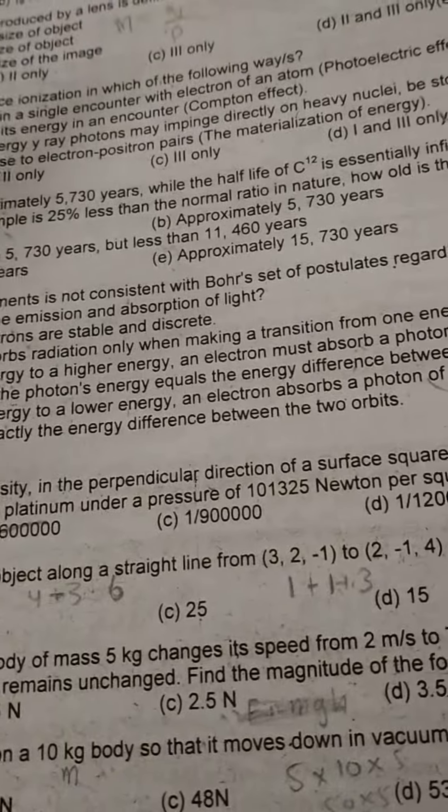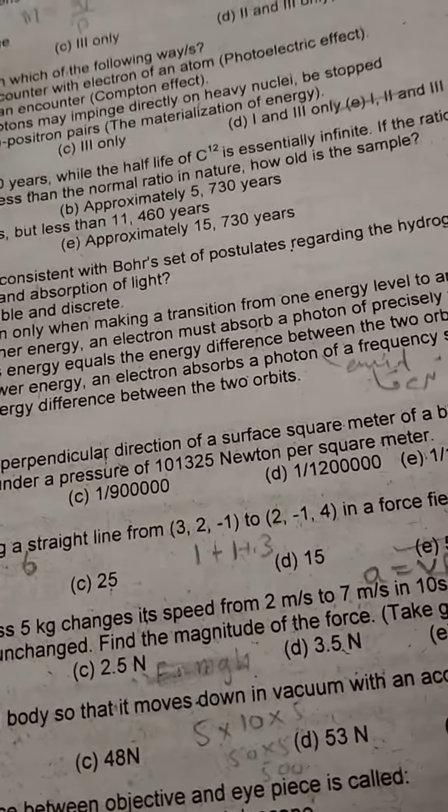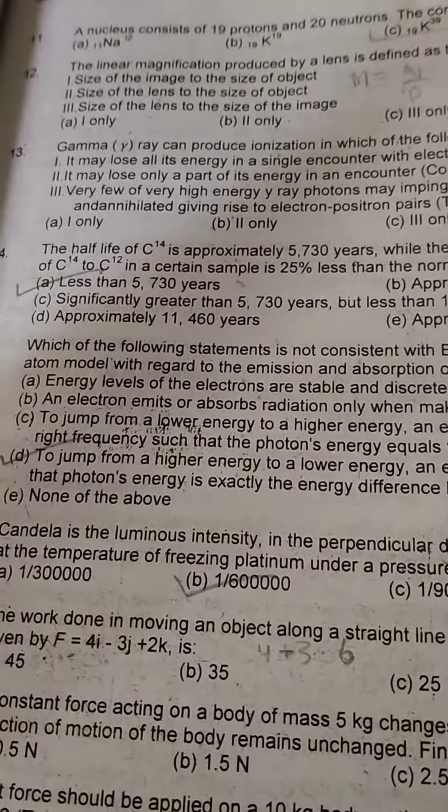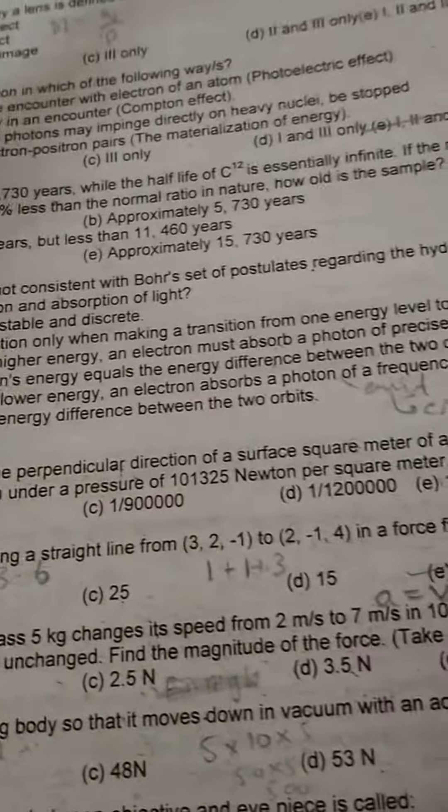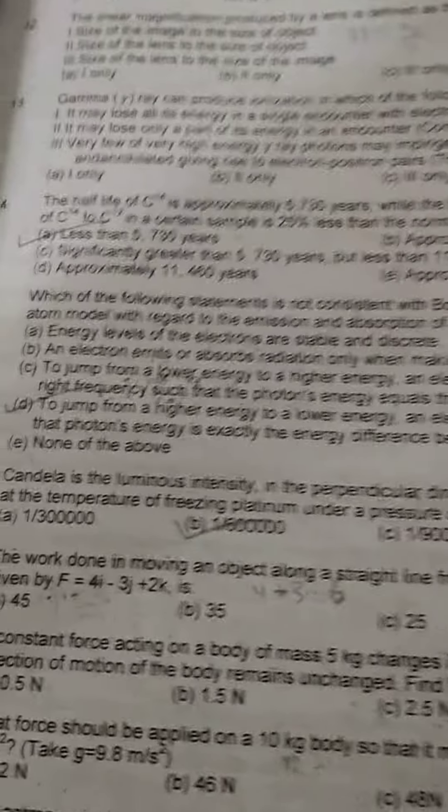To jump from lower to higher energy, an electron must absorb a photon of right frequency such that the photon's energy equals the energy difference between the two orbits. This is correct.